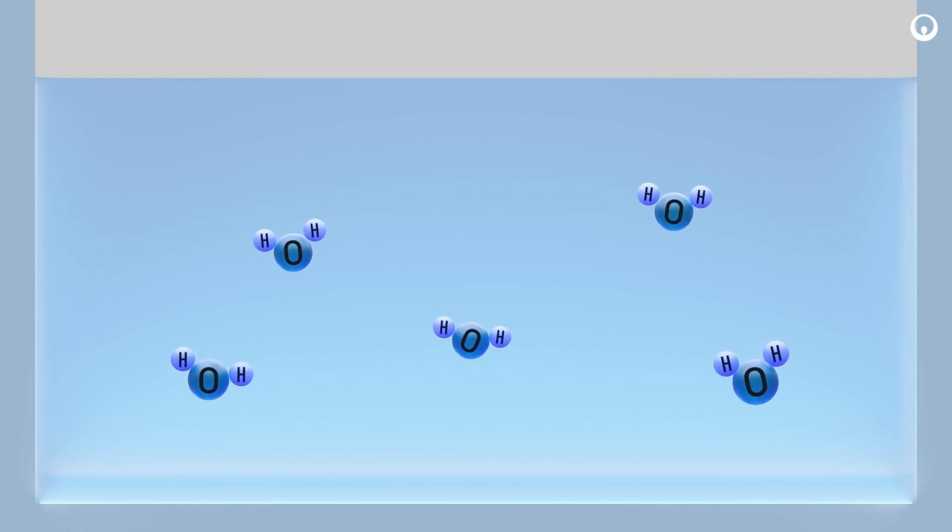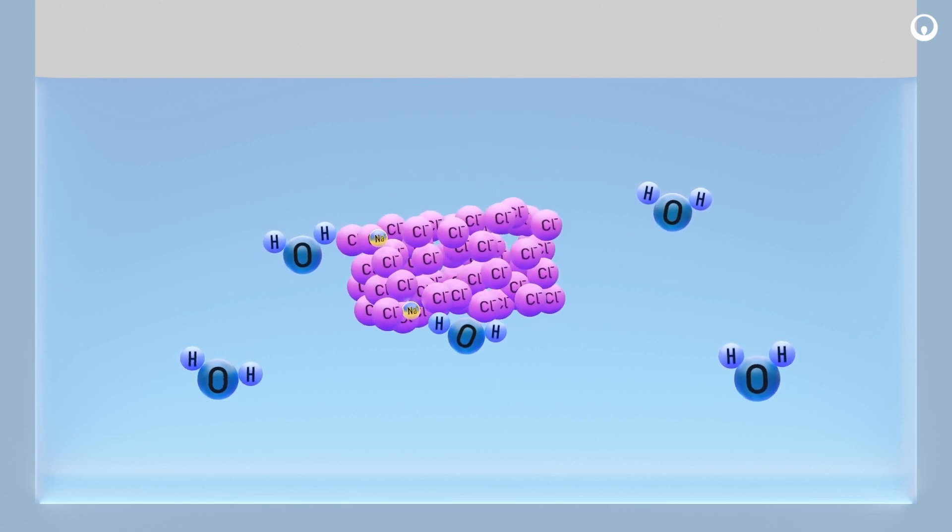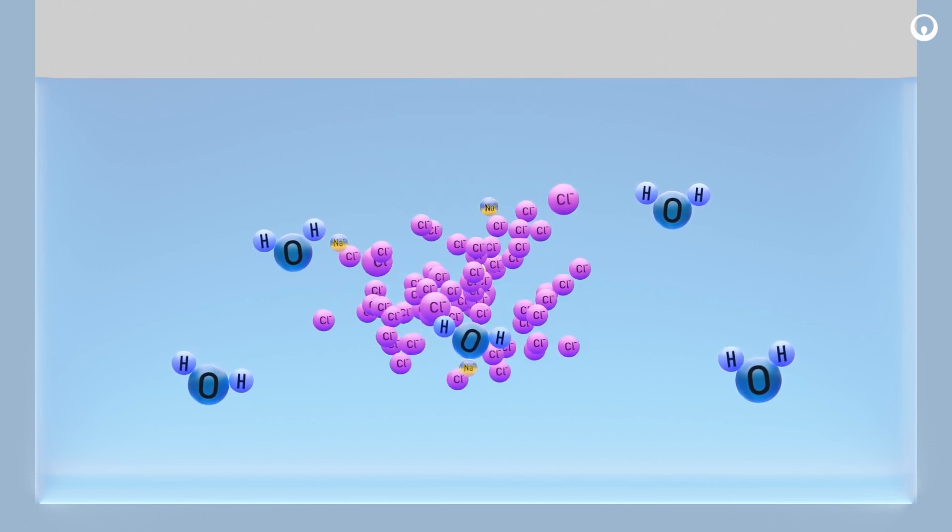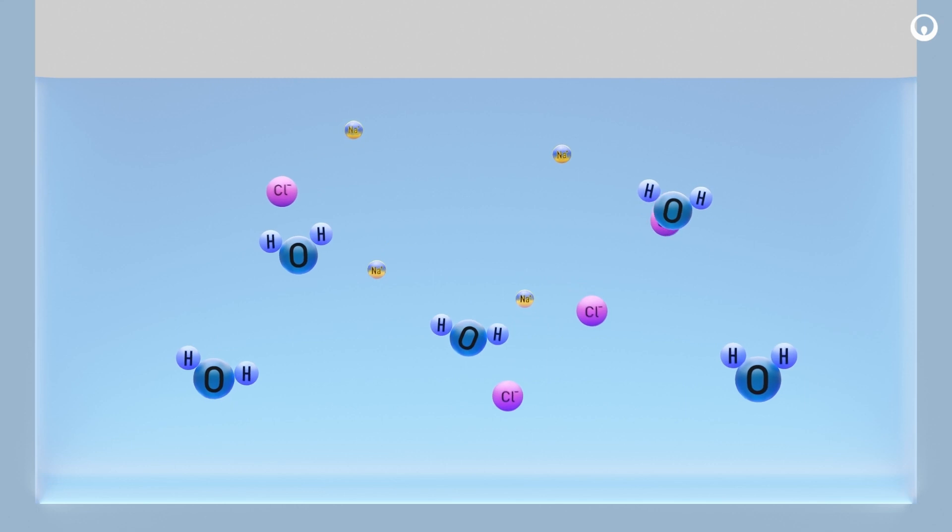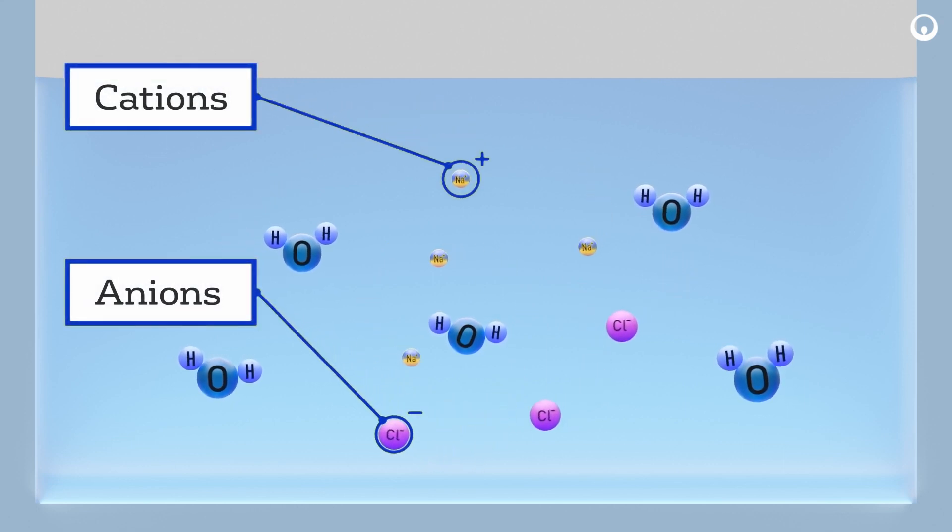When salts dissolve in water, they are broken up into individual ions. The positively charged ions, like sodium, are called cations, and the negatively charged ions, like chloride, are called anions.